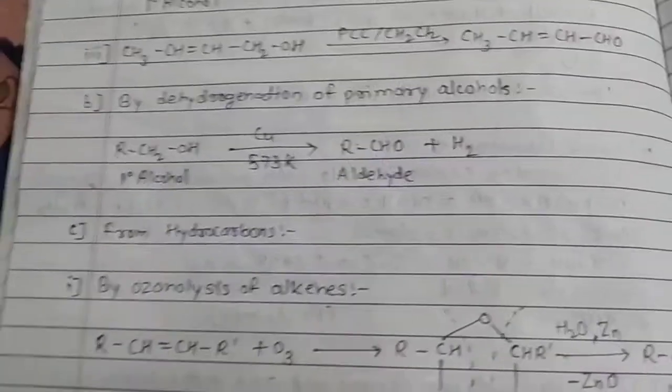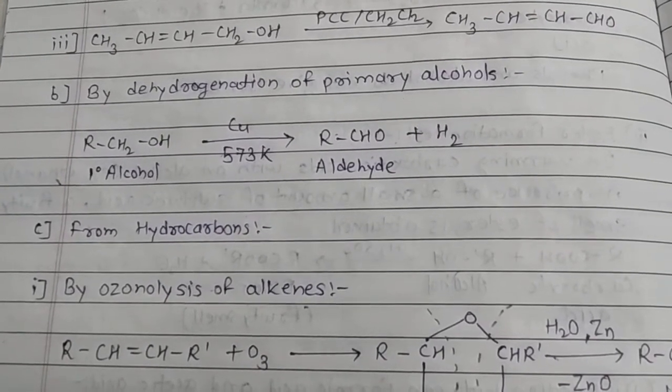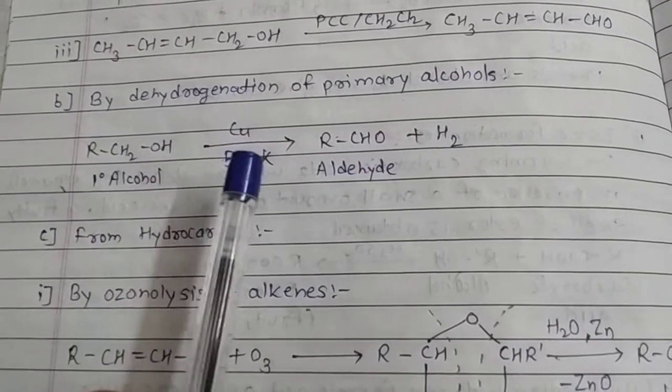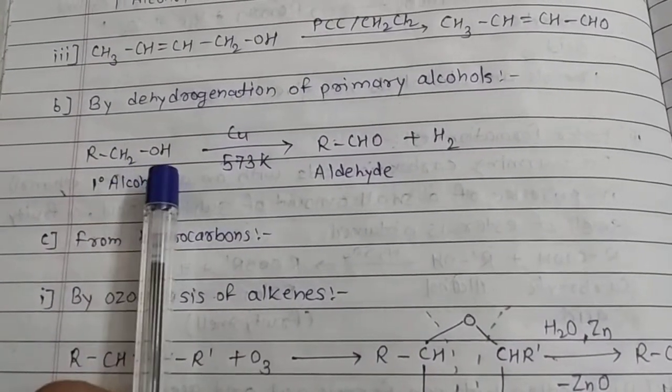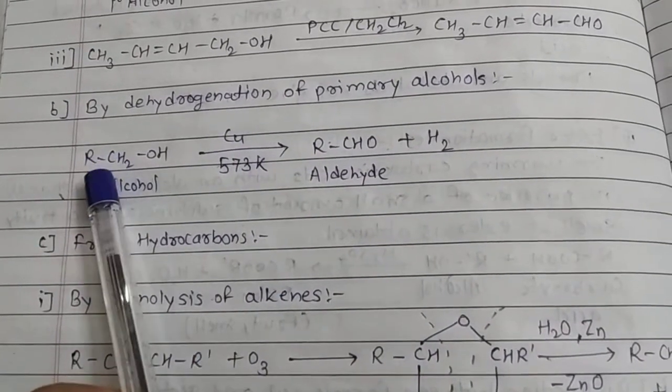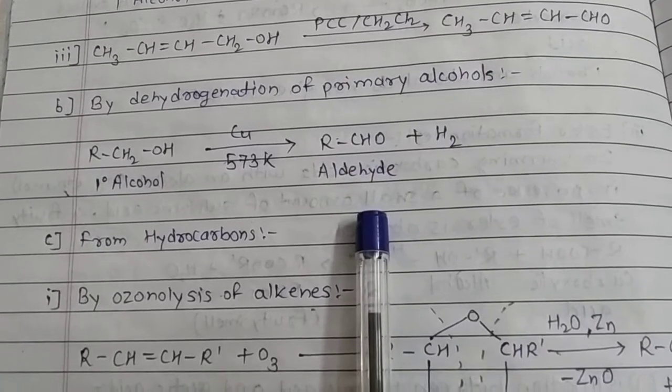Next is dehydrogenation of primary alcohols. Copper metal is used for dehydrogenation. It removes hydrogen from primary alcohol. Two hydrogens are removed, hydrogen gas is evolved, and what remains is aldehyde. This is the second preparation method.